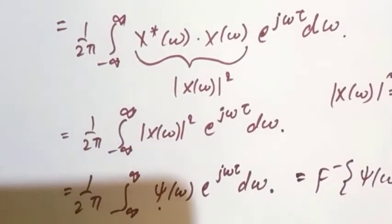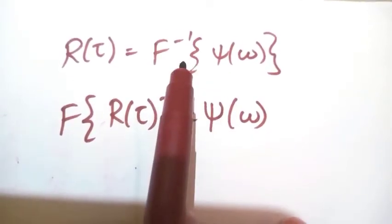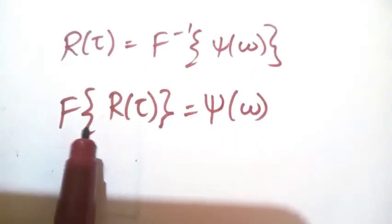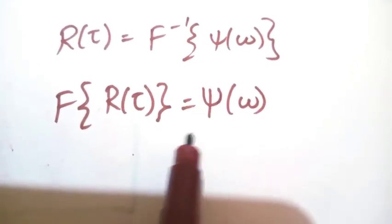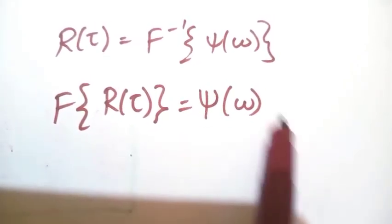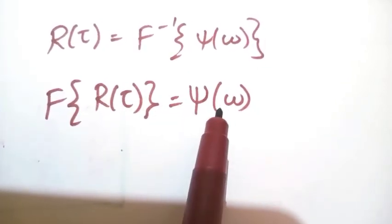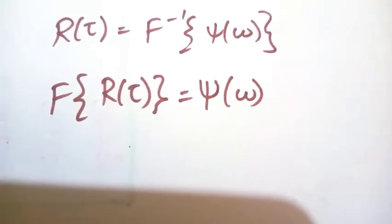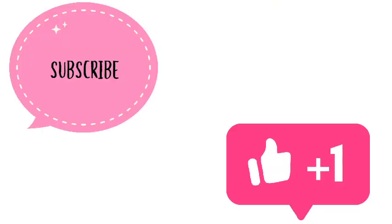So finally we can write R(tau) as the inverse Fourier transform of psi(omega). Taking the Fourier transform of both sides, the Fourier transform of R(tau) equals psi(omega). This proves the relationship between autocorrelation and energy spectral density. Thanks for watching — if you like this video, don't forget to click the like button and subscribe to the channel.